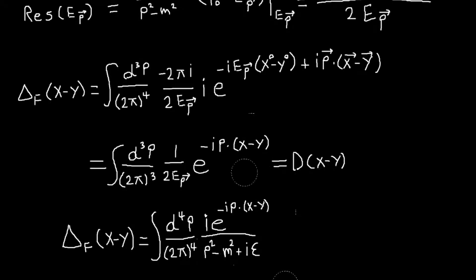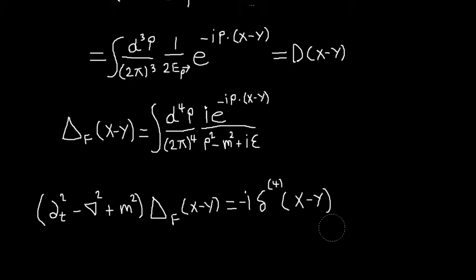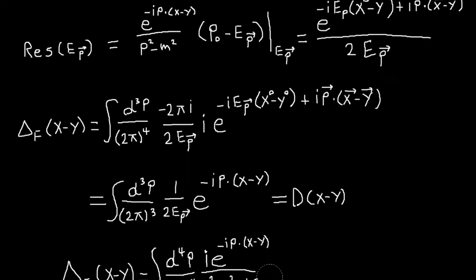So yeah. And then the last thing is that this Feynman propagator is a Green's function of our Klein-Gordon operator. Which is, I guess, interesting. I can't remember if that actually comes into play later, but it's an interesting fact. So yeah, that's something. All right.